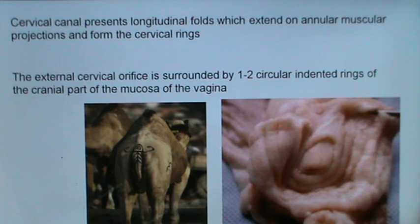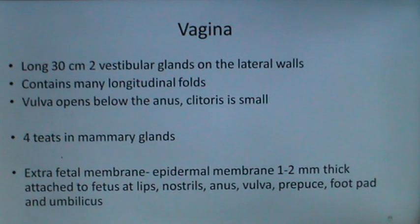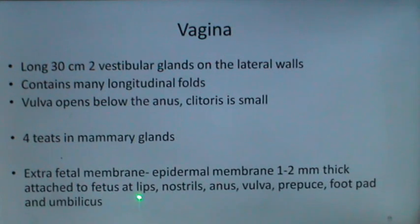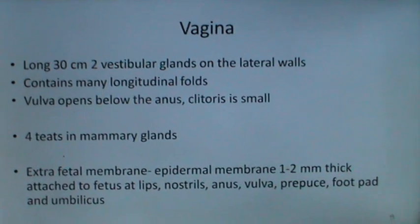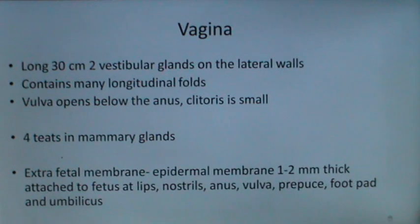The vagina is long — 30 cm — with 2 vestibular glands on the lateral walls and many longitudinal folds. The vulva opens below the anus and the clitoris is small. There are 4 teats in the mammary glands of the camel. A speciality is the extra fetal membrane known as the epidermal membrane, 1 to 2 mm thick, attached to the fetus at the lips, nostrils, anus, vulva, prepuce, foot pad, and umbilicus. Its exact function is not known but is presumed to protect the fetus from jerks.